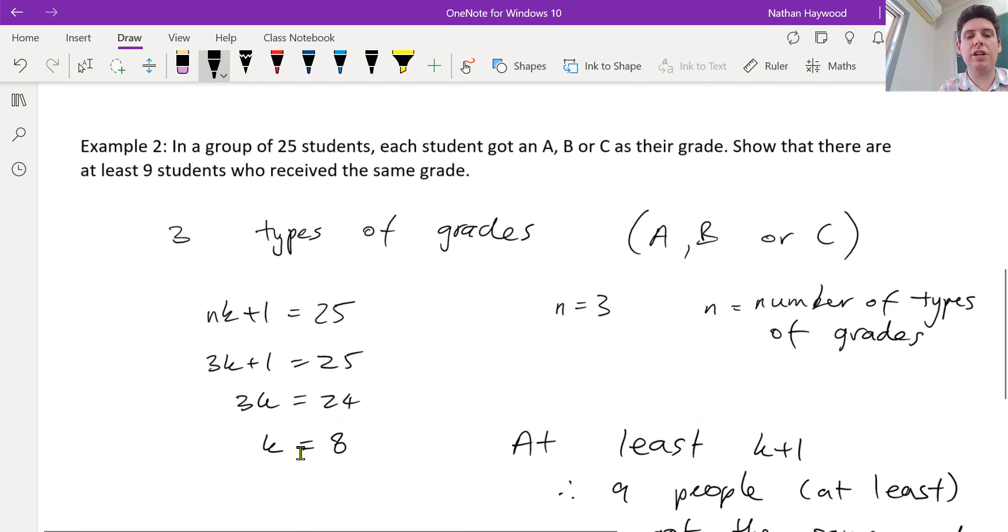Yeah, so if you think about the number 25, there's three boxes to fill. And in each box, you could put eight people and there's one left over. So at least one of those boxes has nine people in that. It could be distributed differently to that. There could be all A's and zero, but there has to be at least one box with at least nine in it.